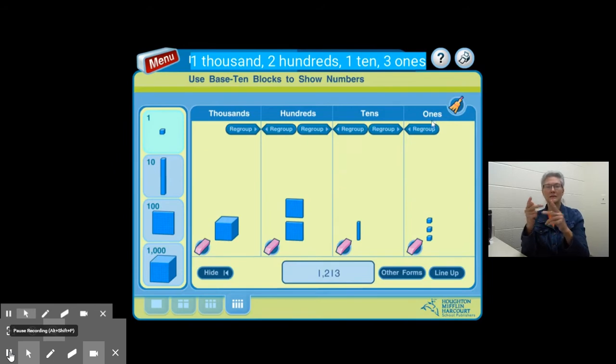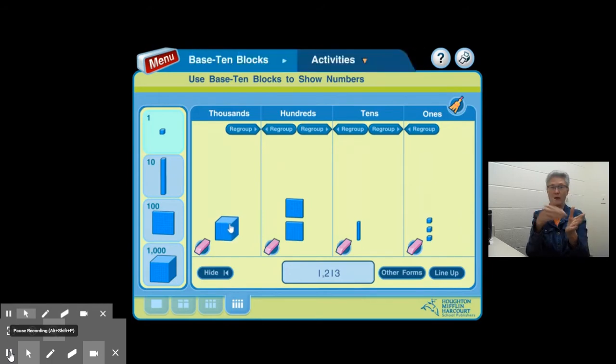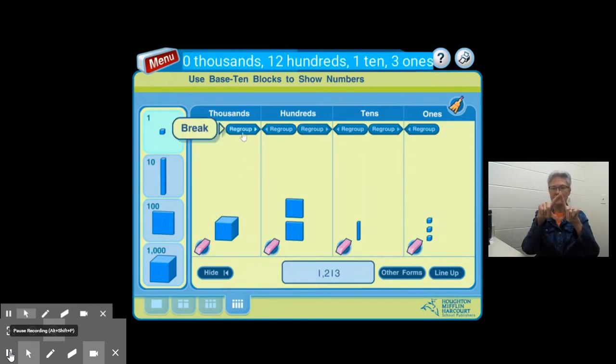We're going to work on regrouping and renaming again today. I'm going to start off by representing 1,213 in a different way by regrouping the thousands. If I regroup the thousands into hundreds, I'm going to have 10 extra hundreds. So I'll show you now.